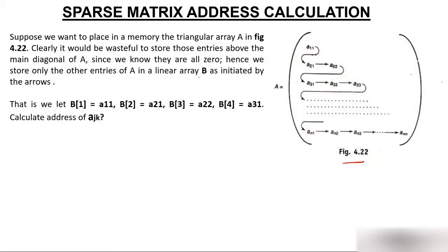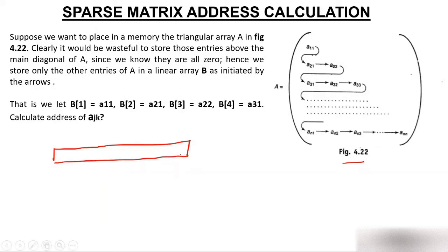We will store this value in a linear array B, as indicated by the arrows. When you studied array address calculation for two-dimension or n-dimension arrays, all memory representation is in linear fashion — either row major order or column major order, but always linear fashion. Similarly, a sparse matrix will also be stored in a linear fashion.